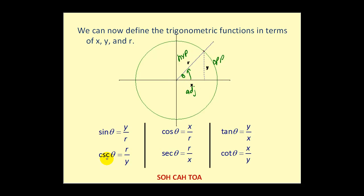Cosecant theta is the reciprocal of sine theta, so instead of y over r we have r over y. Secant theta, the reciprocal of cosine, is r over x instead of x over r. And cotangent theta, the reciprocal of tangent, is x over y instead of y over x. The acronym SOHCAHTOA still helps — you just use x, y, and r instead.